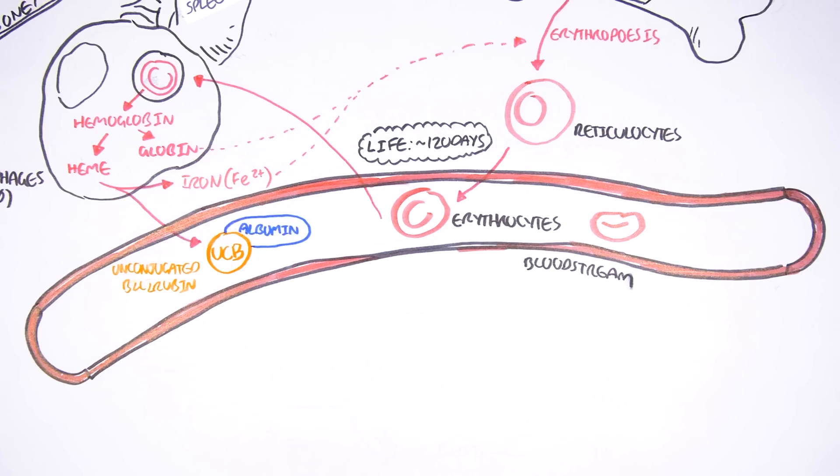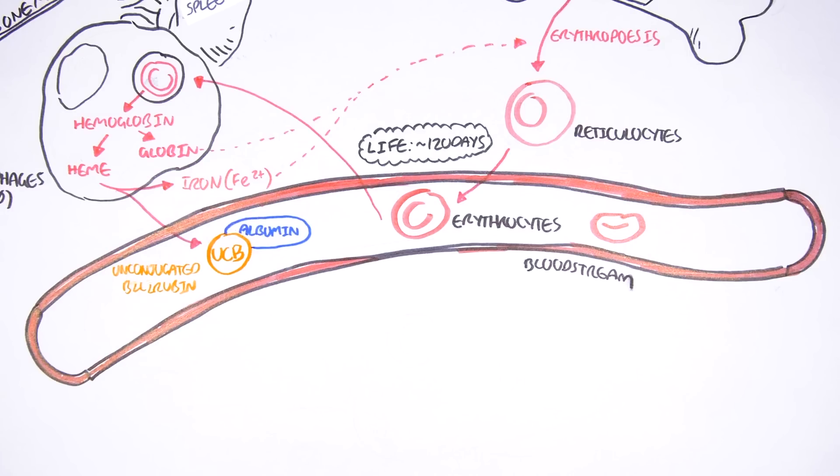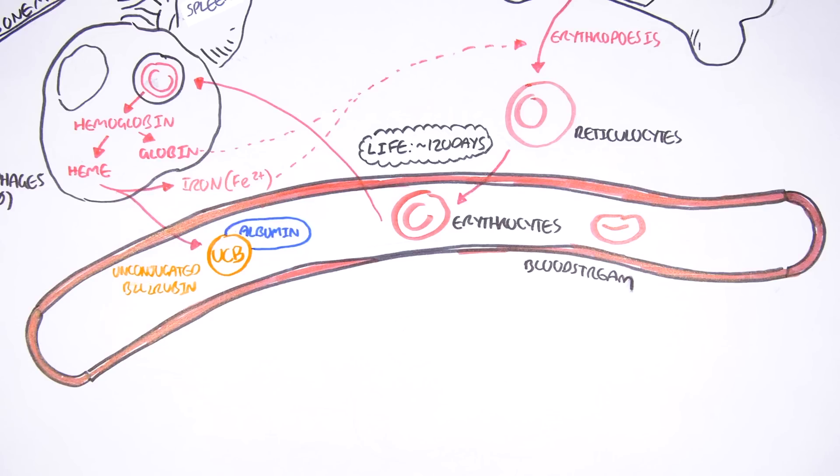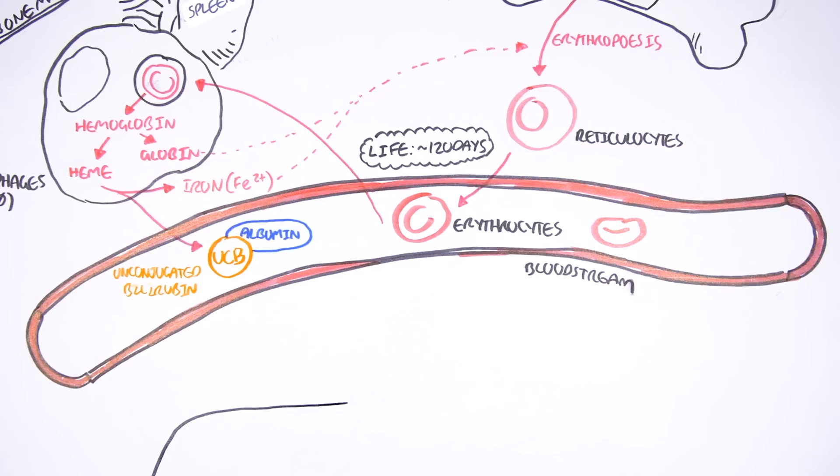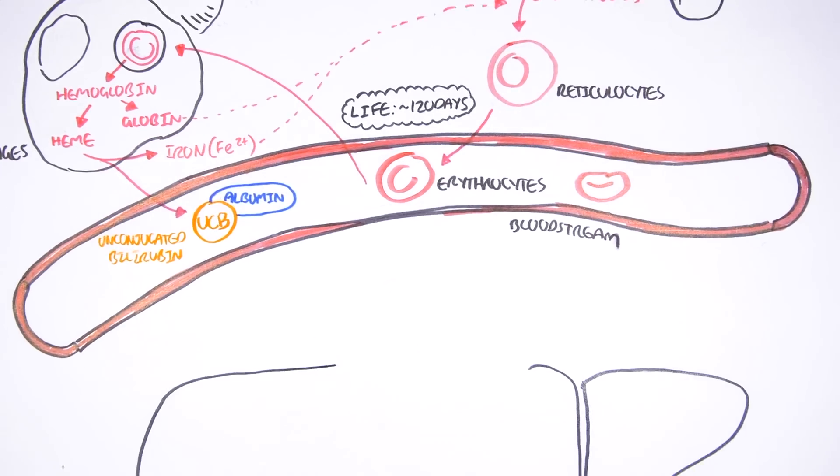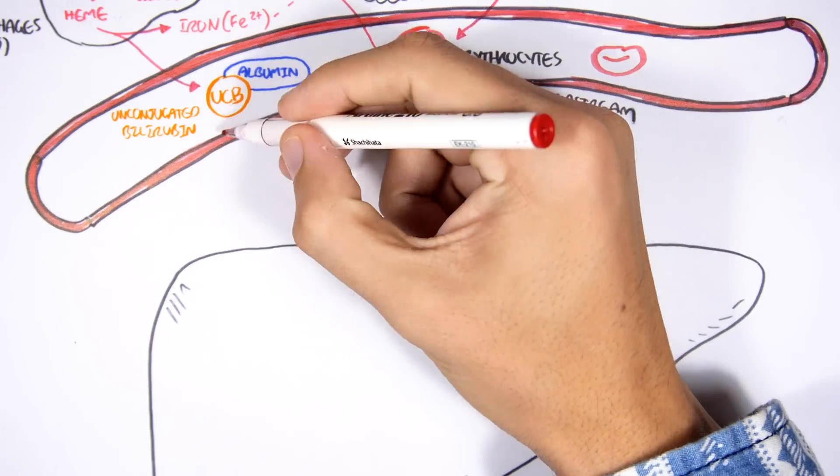The unconjugated bilirubin is actually lipid-soluble. And so when it's in the blood, it requires a protein to carry it around. The protein that carries the unconjugated bilirubin around is called albumin. So albumin will carry the unconjugated bilirubin to the liver for further metabolism.